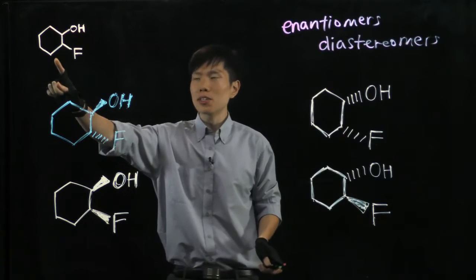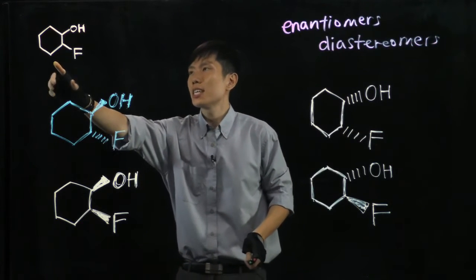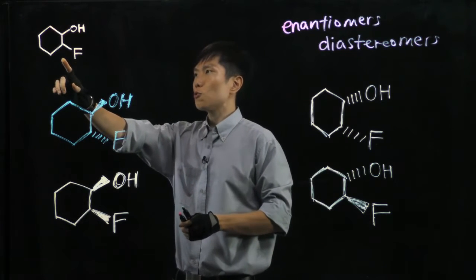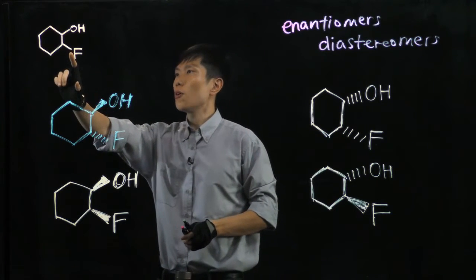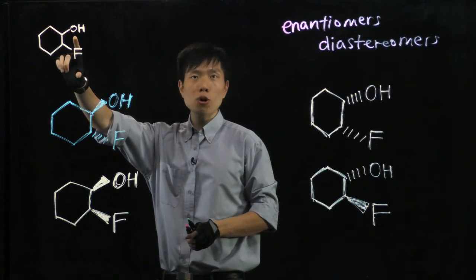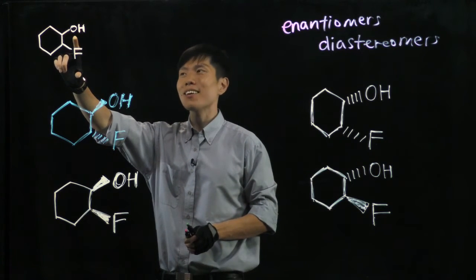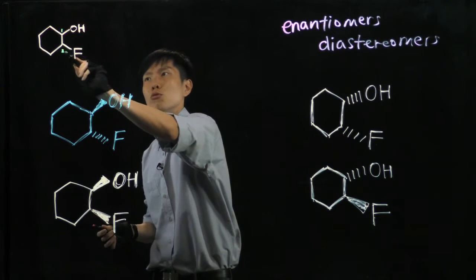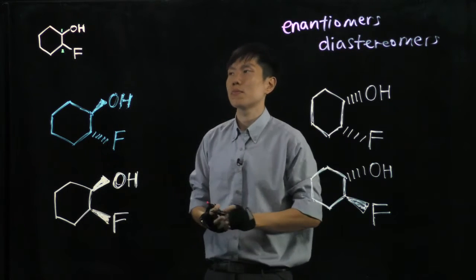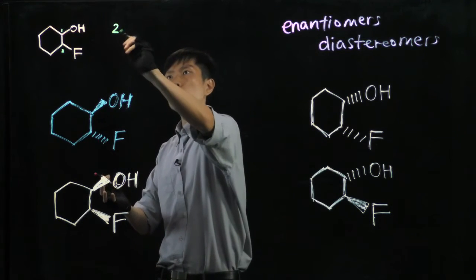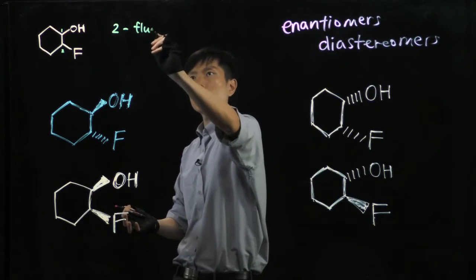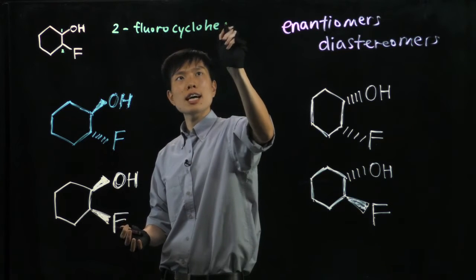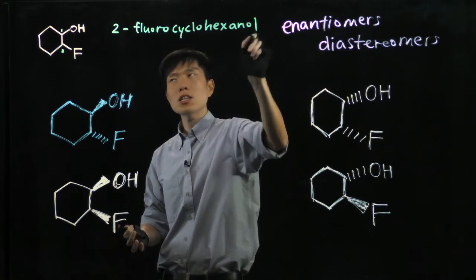First we focus on this molecule I'm pointing to at this corner. If you are asked to name this molecule, how will you do it? We see two functional groups, the fluoroalkane and the alcohol, but alcohol has a higher priority than the alkyl halide, so this must be carbon number one. That must be number two to get a smaller number. It will be known as 2-fluorocyclohexanol.